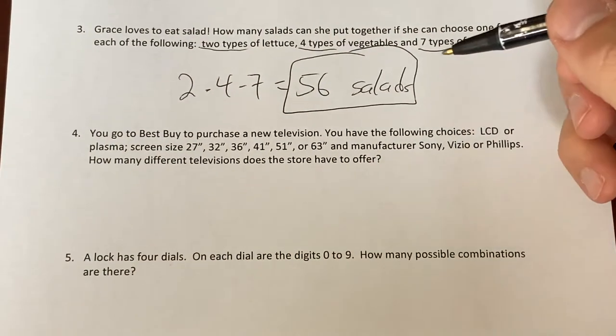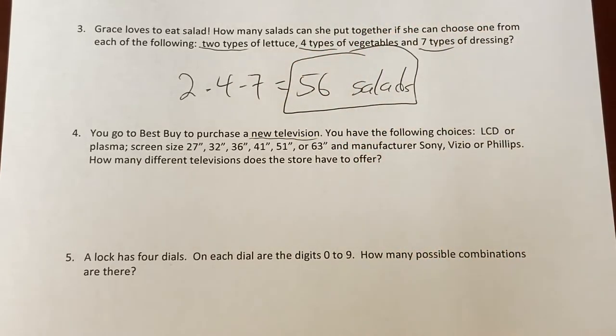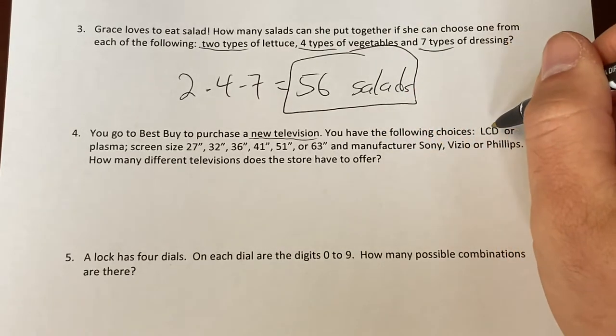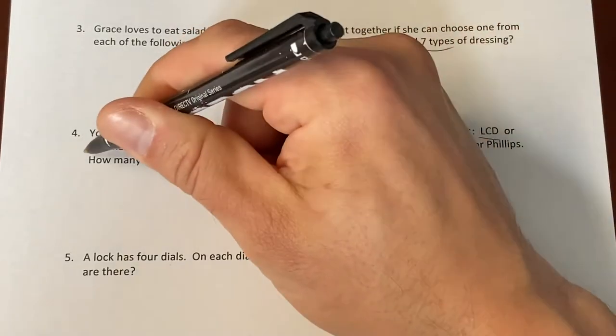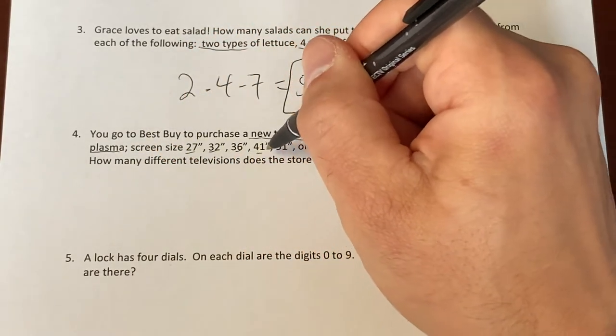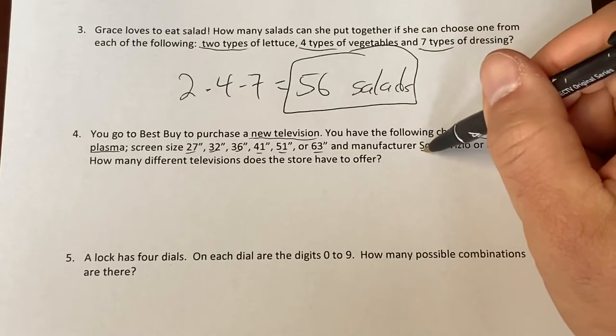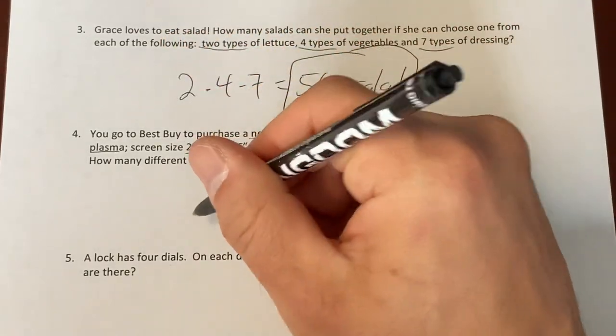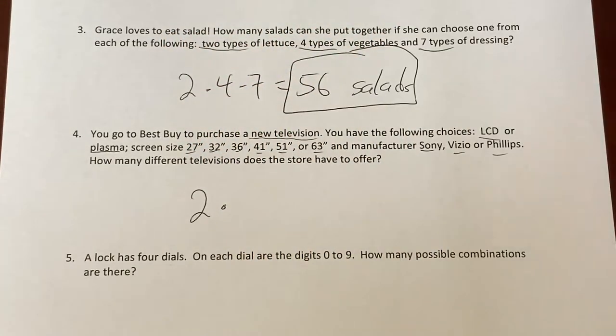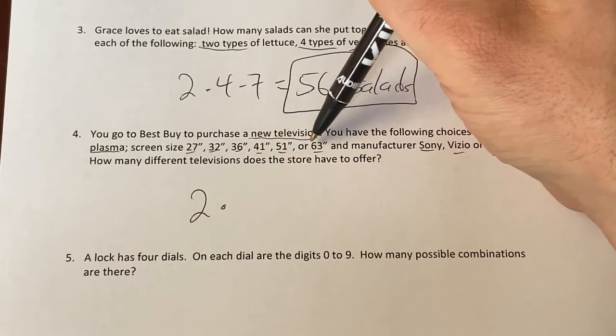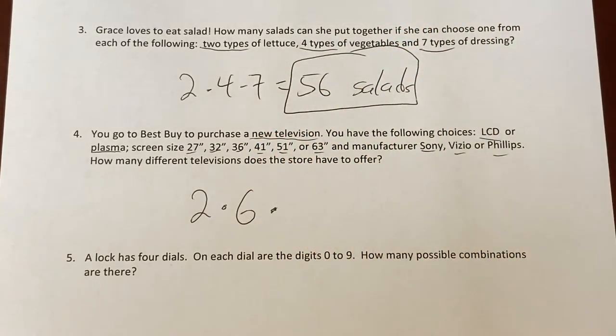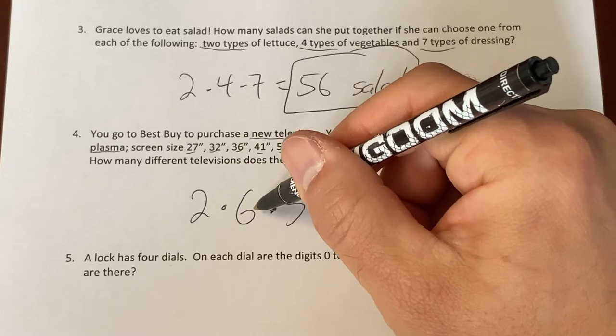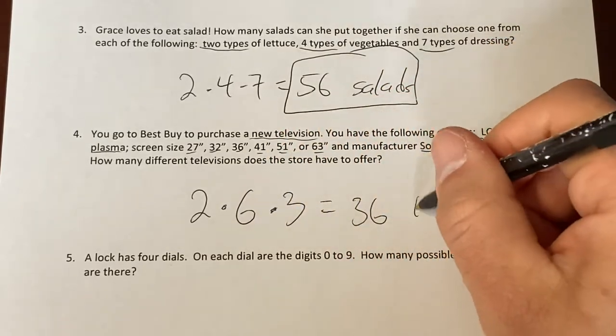Number four, you go to Best Buy to purchase a new TV. That's one of the more fun things you'll ever do in life is buy a new TV. Because it's just like an exciting thing. So you have the following choices. LCD or plasma. Screen sizes, 27, 32, 36, 41, 51, 63. And manufacturer, Sony, Vizio, or Philips. How many different televisions does the store have? First choice, LCD or plasma. That's two options. Second choice, the size. One, two, three, four, five, six different sizes. Six options. Third choice, manufacturer. Sony, Vizio, Philips. That's three options. Two times six is 12. Twelve times three is 36 TVs.